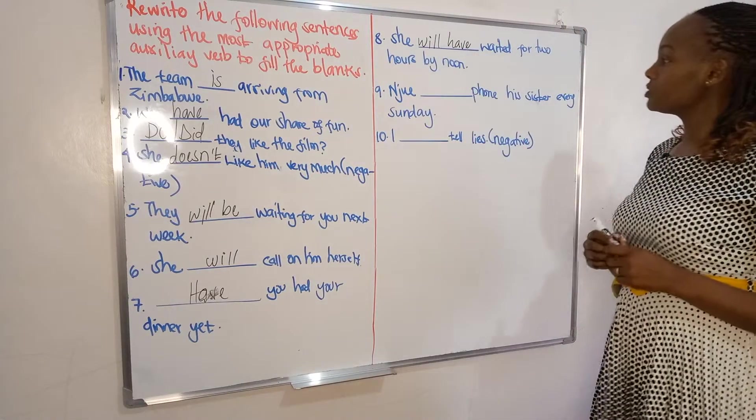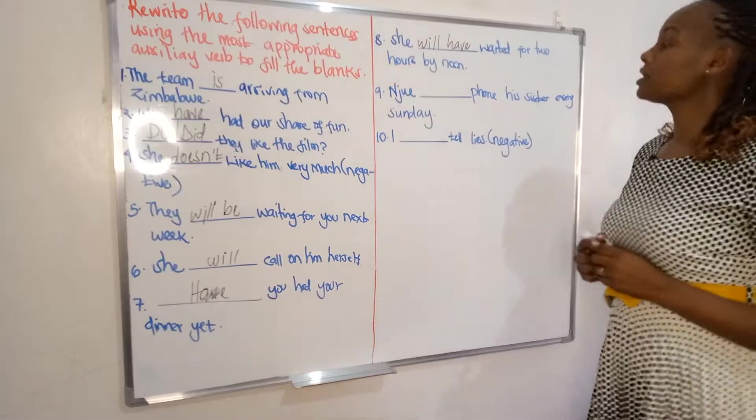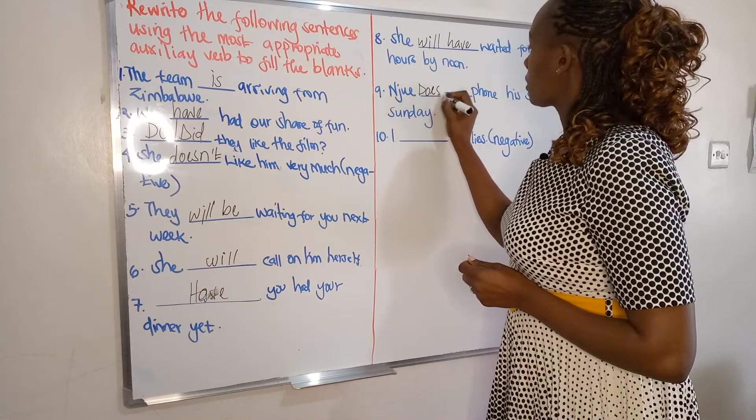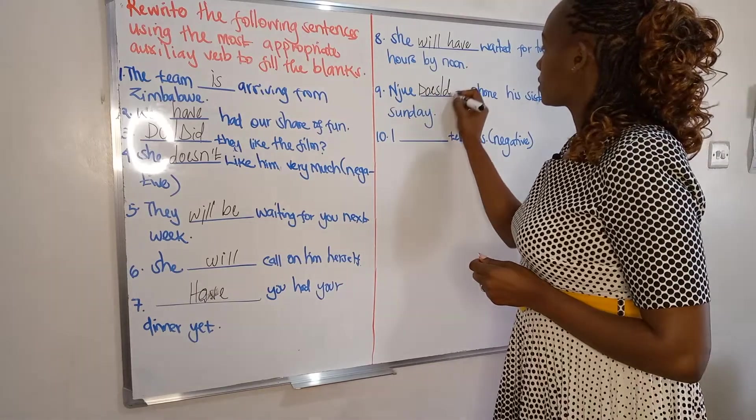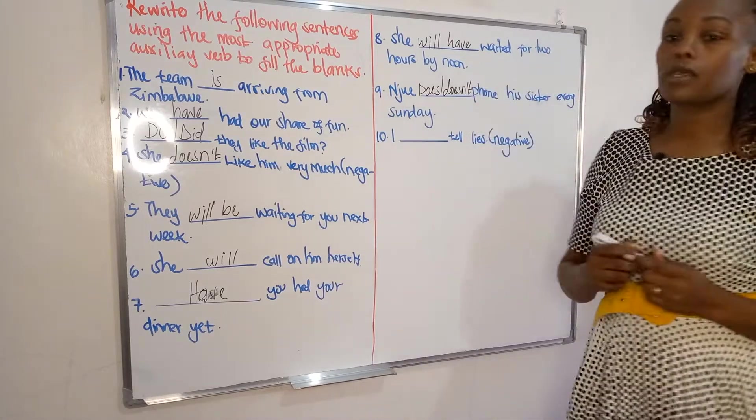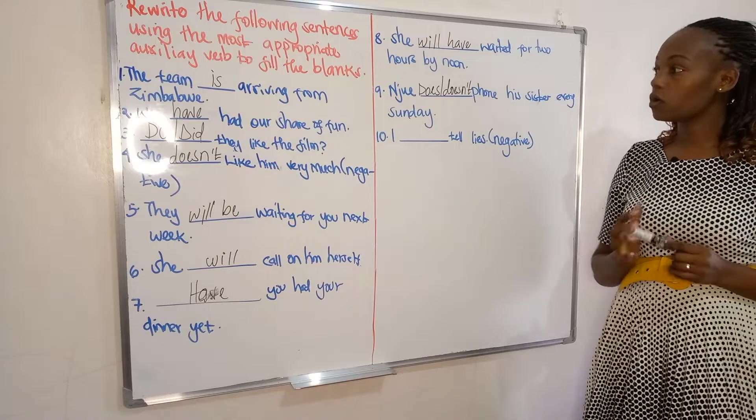She will have waited. Number nine: she dash phone her sister every Sunday. You can say does, or doesn't, or did, or will phone her sister every Sunday.